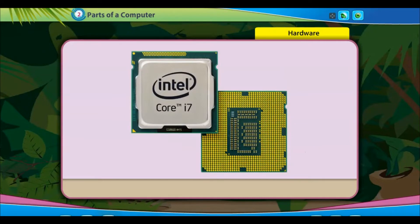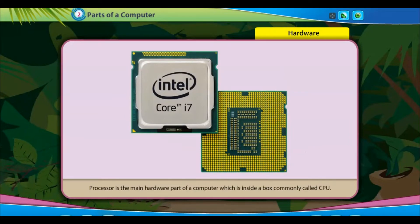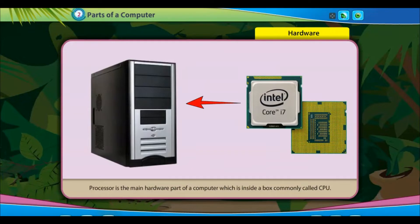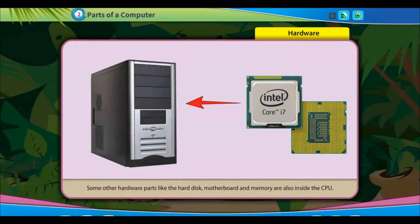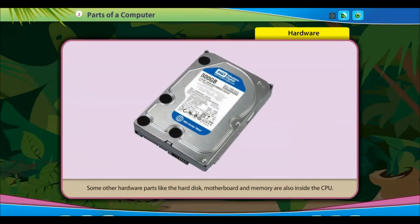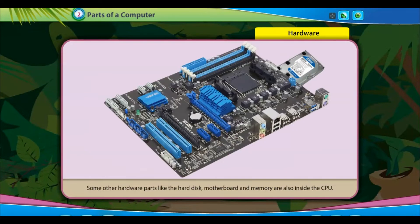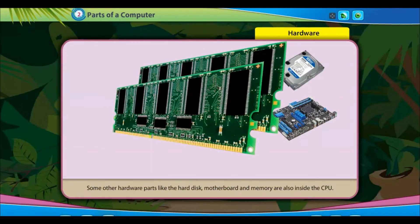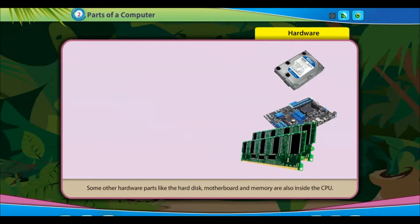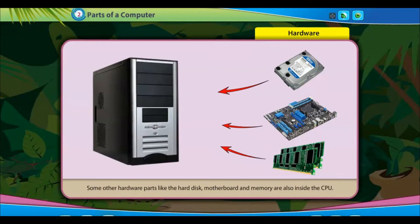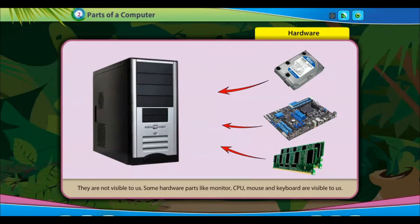The processor is the main hardware part of a computer, which is inside a box commonly called the CPU. Some other hardware parts like the hard disk, motherboard and memory are also inside the CPU. They are not visible to us.